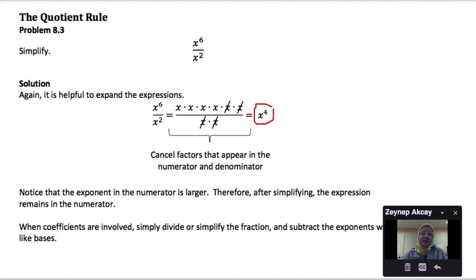When we have coefficients involved, we simply divide or simplify fractions and subtract the exponents with like bases.